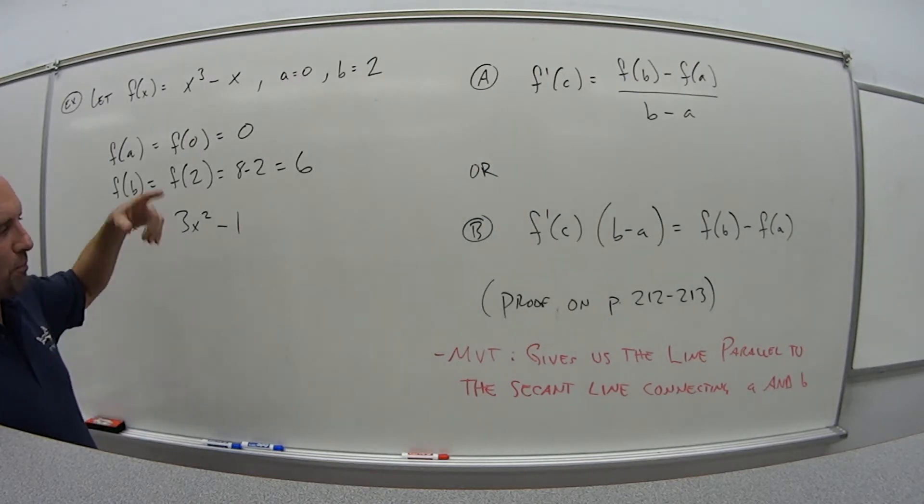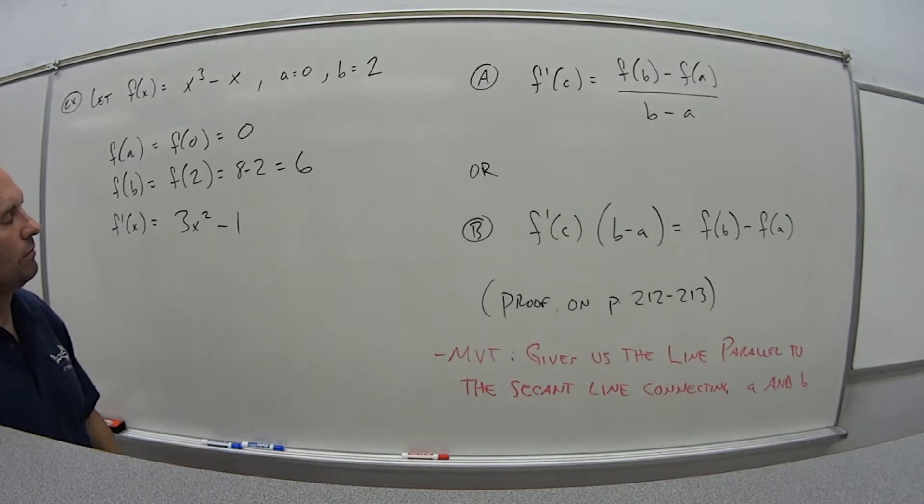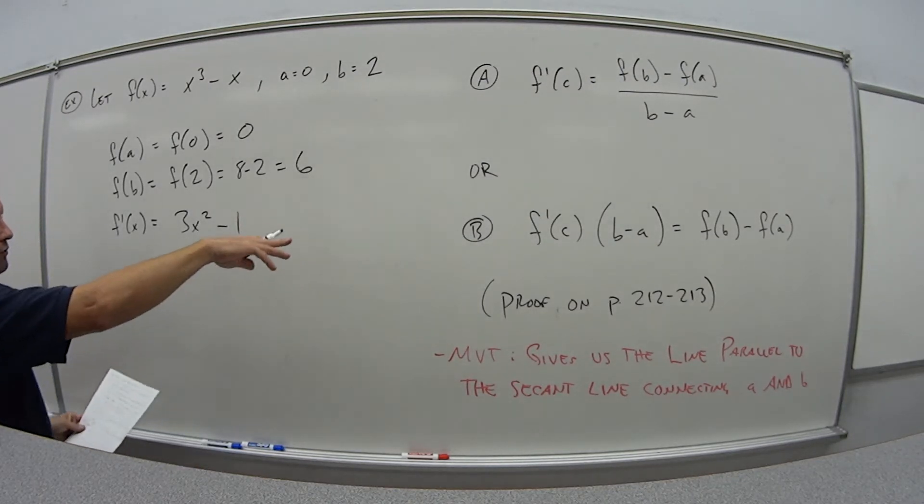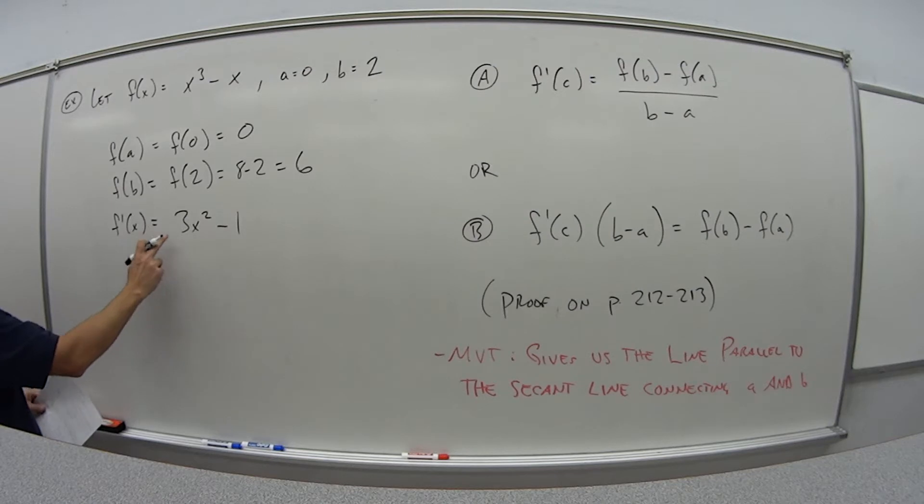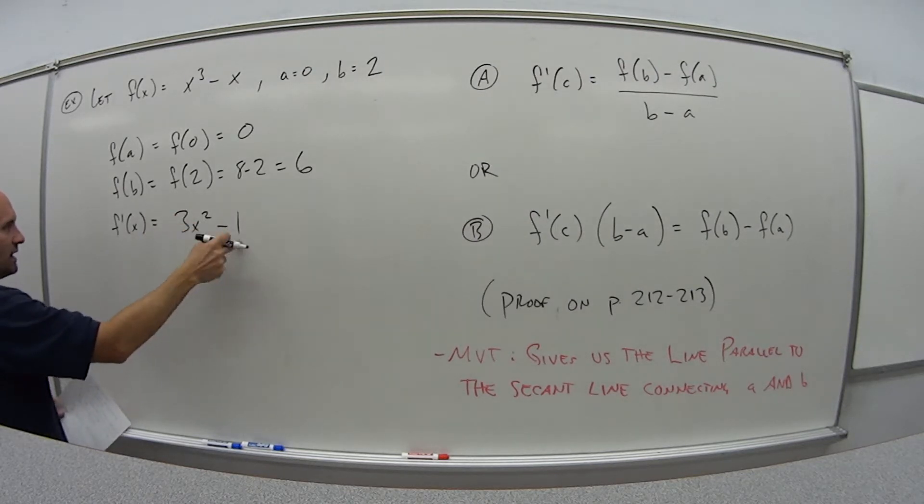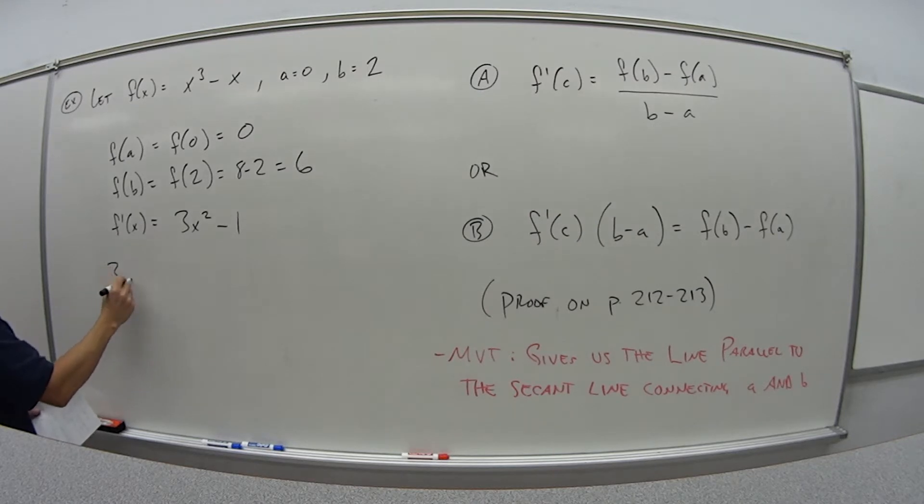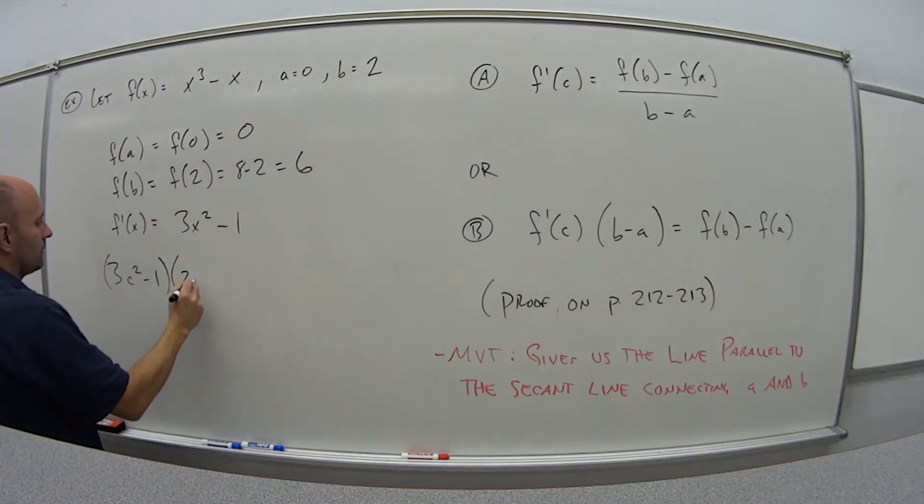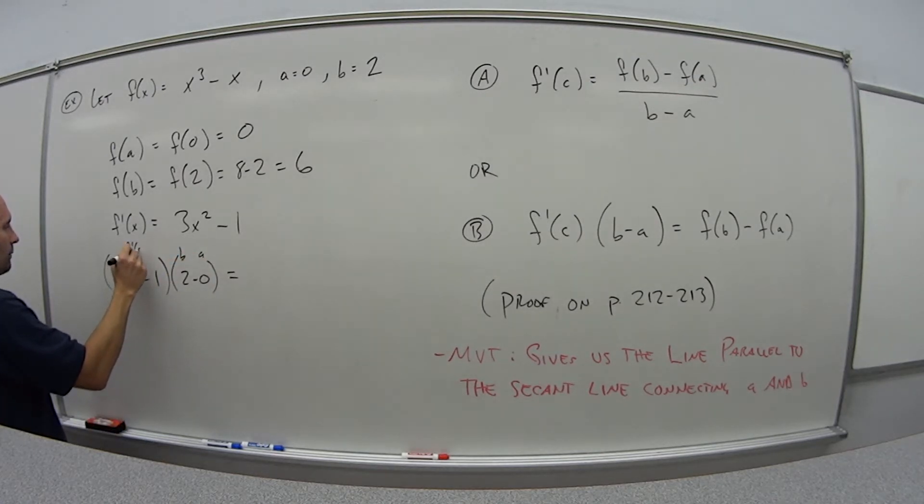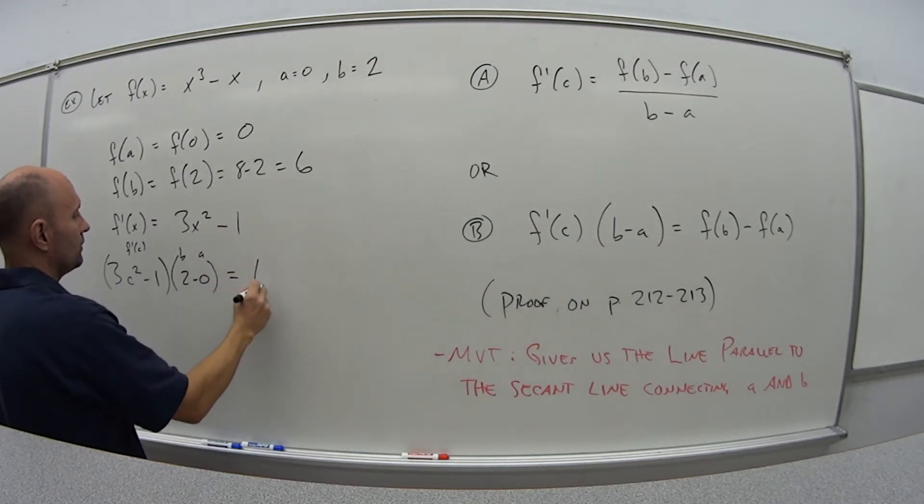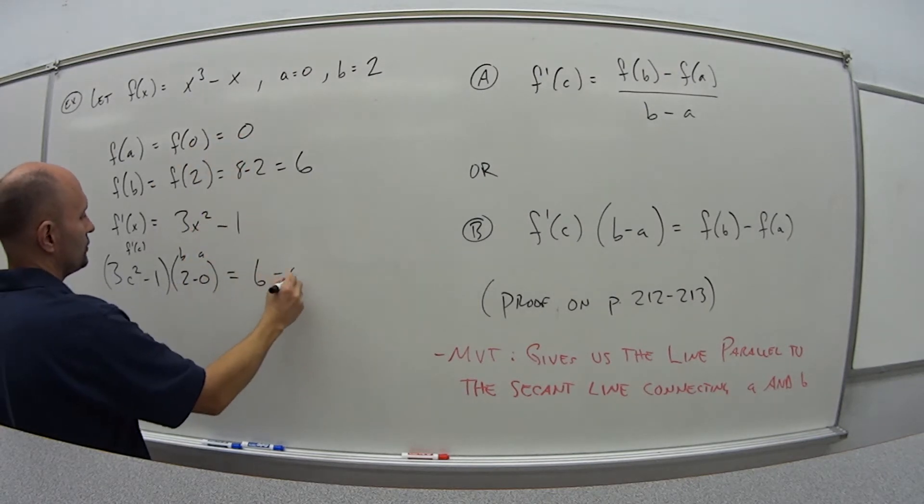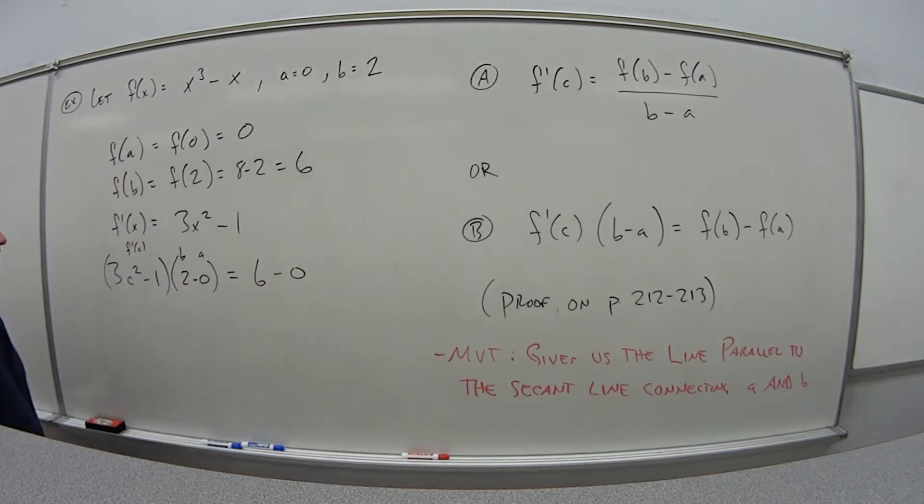Now we need to find the point c where this parallel line falls. So if I use option b, I have f'(c). Well, f'(c) is 3c² - 1 times (b - a), which is 2 - 0. This is b, this is a, this is f'(c). And then f(b), so this whole thing equals f(b), which is 6, minus f(a), which is 0.